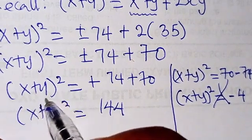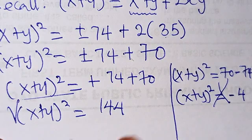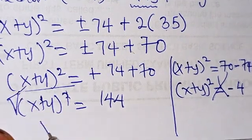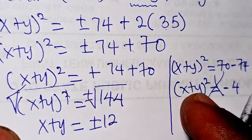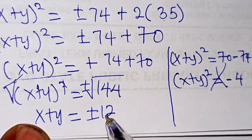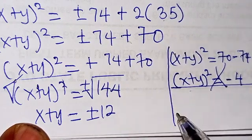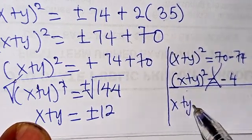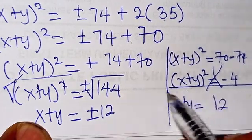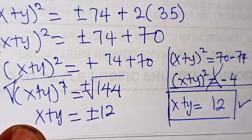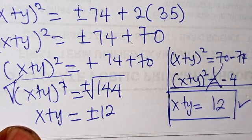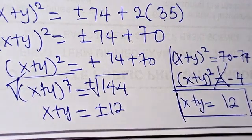Taking the square root of both sides, x plus y equals plus or minus 12. But since we are interested in the positive value, x plus y equals 12. We neglect the negative value, and that is the solution.